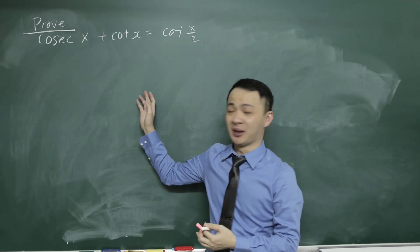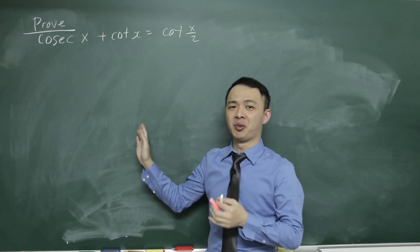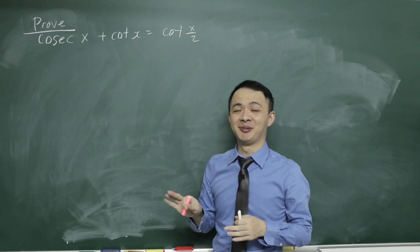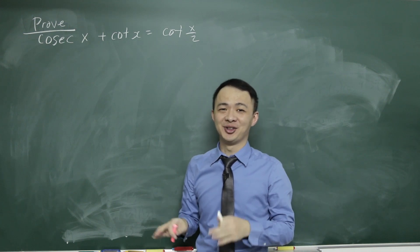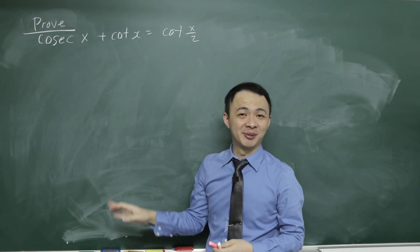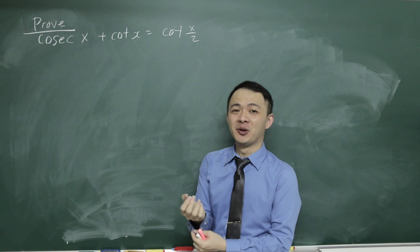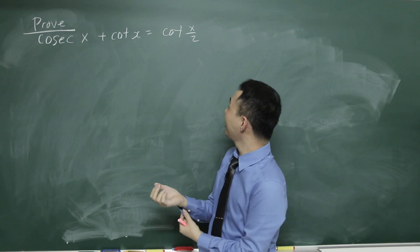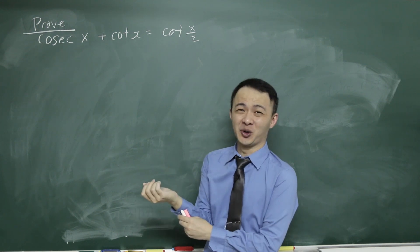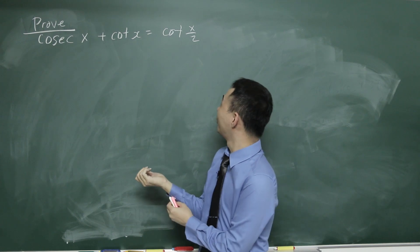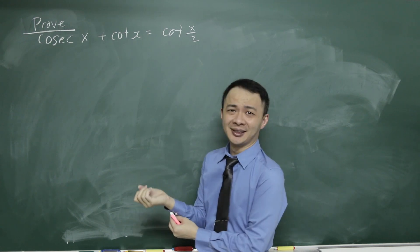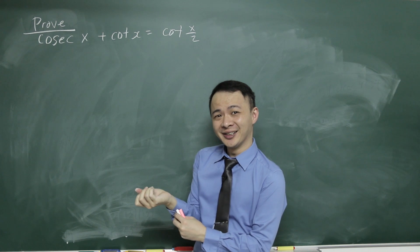Today I'm going to discuss these trigonometry function questions because I find this question is a little bit unusual. One of the reasons is because you will seldom actually see something like cotangent x over 2, because cotangent x over 2 is not a common one.